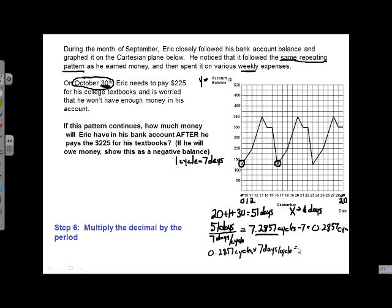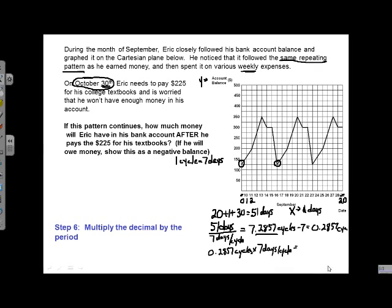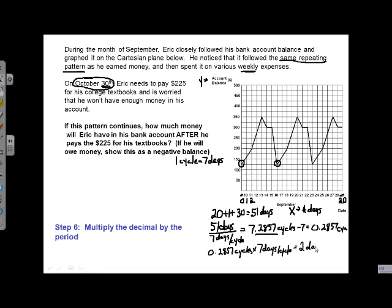And again, if we look at the units, it's kind of neat. We have cycles times or divided by cycles. So our cycles actually cancel out, and it's going to tell us how many days it is. Now if you do that, you'll find it comes out to 2. Or a number very close to 2. So it leaves us 2 days left.